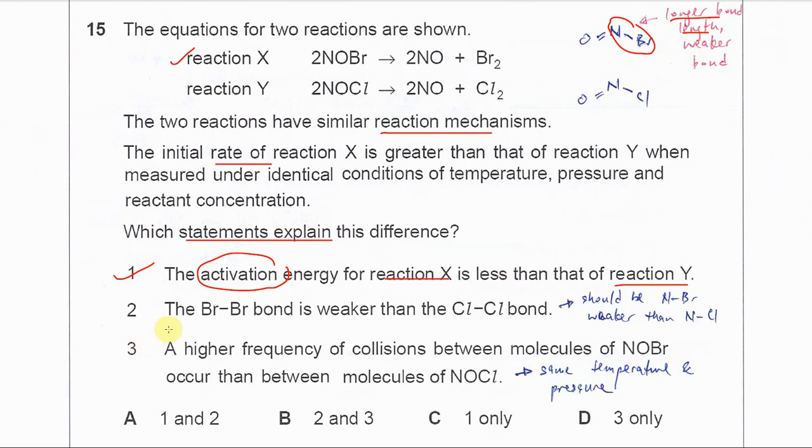Second statement is the Br-Br bond is weaker than the Cl-Cl bond. For this one, it should be the NBr bond and NCl, because it's the reactants to form the products.